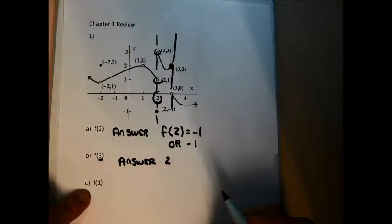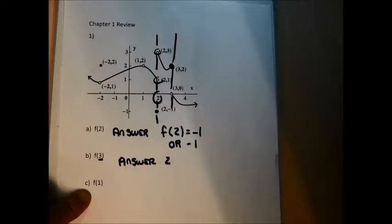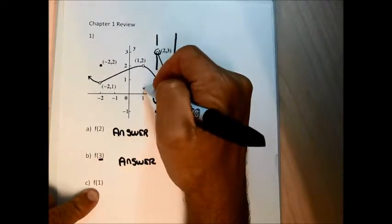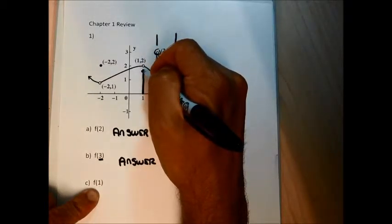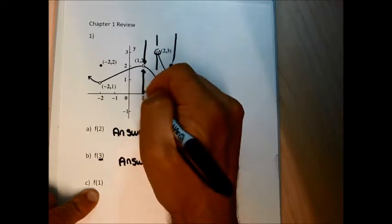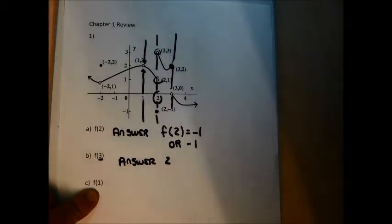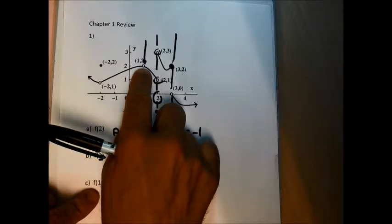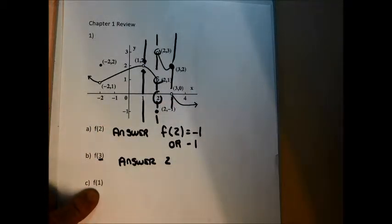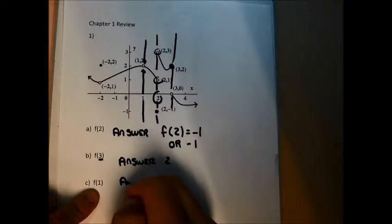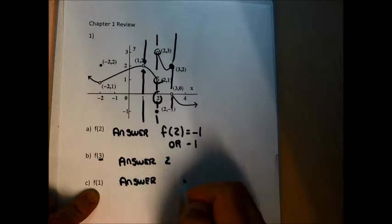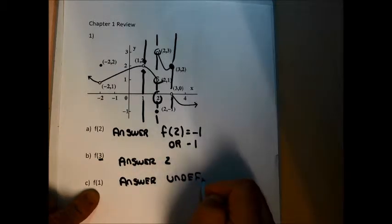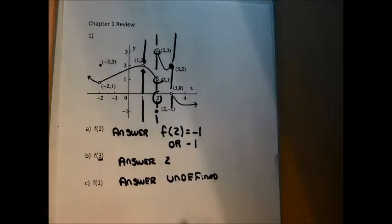For f(1), I go to 1 on the x-axis and trace up and down looking for a point with 1 as its x-coordinate. There's only one such point and it has an open circle, so it's not actually a point on the graph. There's no point on the graph with 1 as its x-coordinate, so the answer is that it's undefined at x = 1. The value 1 is not part of the domain of this function.